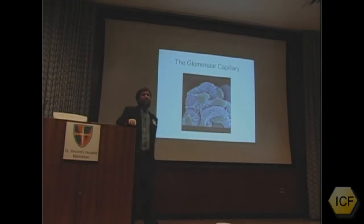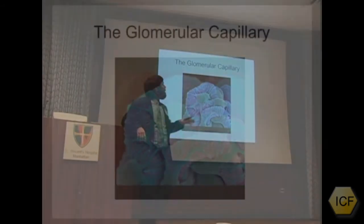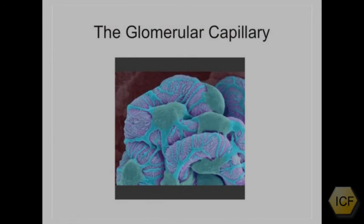I hope you can see that in the back. It's a beautiful electron microscopy of a glomerulus. Each of these is a capillary tube, and the capillary tubes are covered up by these cells, and those cells are called podocytes.